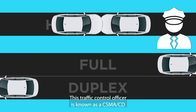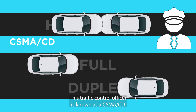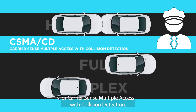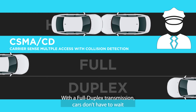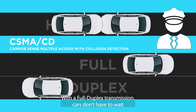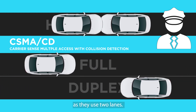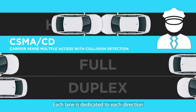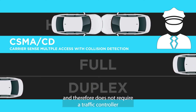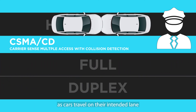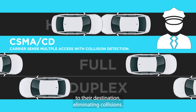This traffic control officer is also known as CSMA/CD, or Carrier Sense Multiple Access with Collision Detection. With a full duplex transmission, cars don't have to wait as they use two lanes. Each lane is dedicated to each direction and therefore does not require a traffic controller, as cars travel on their intended lane to their destination, eliminating collisions.